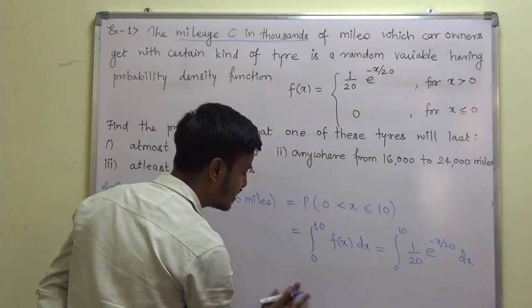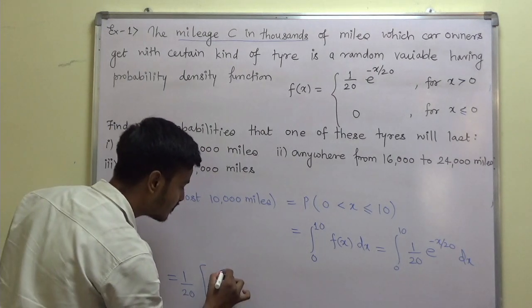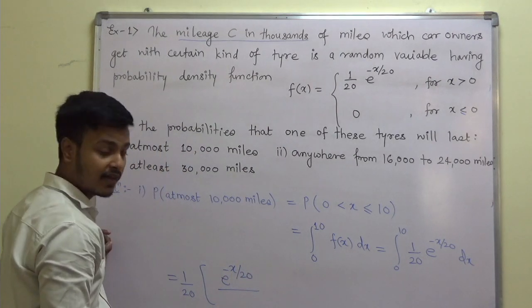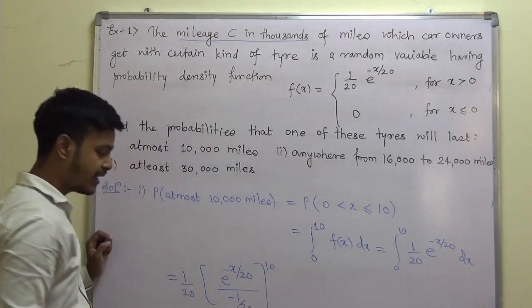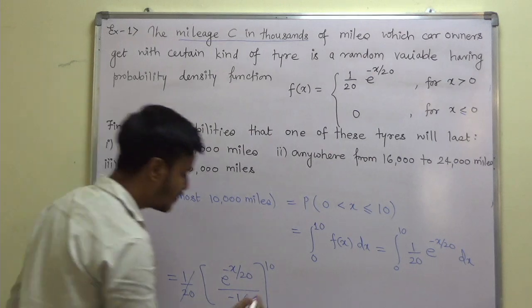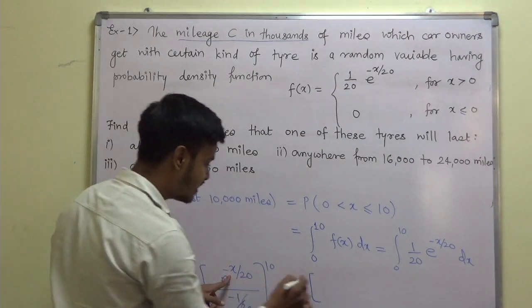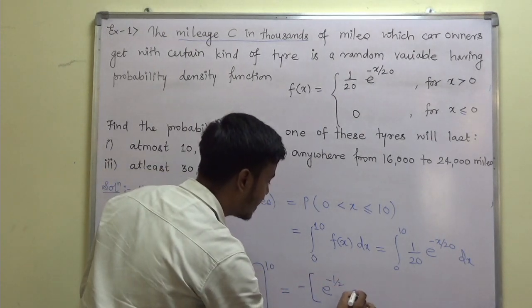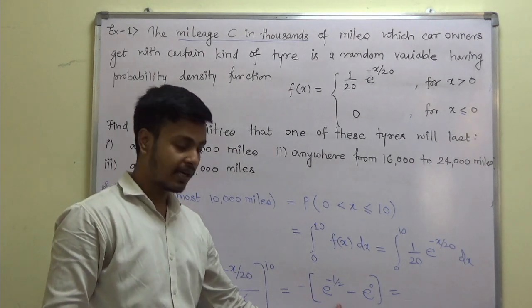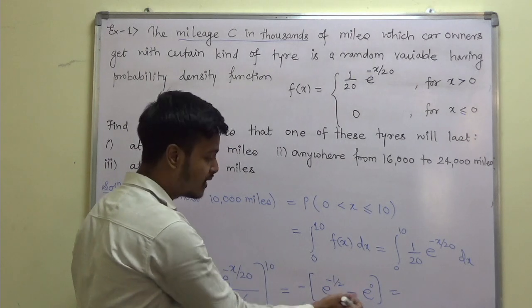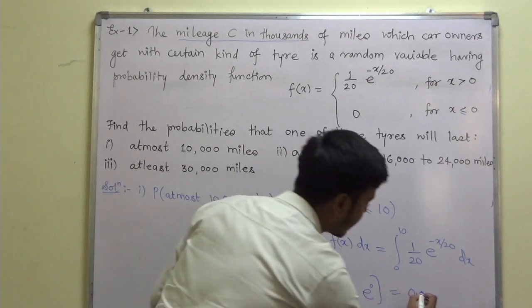Take 1/20 outside. The integration of e^(−x/20) — don't forget to divide by the coefficient of x. The coefficient of x is −1/20. So we get (1/20) × [e^(−x/20) ÷ (−1/20)] from 0 to 10. The 1/20 cancels with the 1/20, and we remain with a minus sign outside. Substituting x = 10 gives e^(−10/20) = e^(−1/2), and x = 0 gives e^0 = 1. Using a calculator, this gives 0.3935.